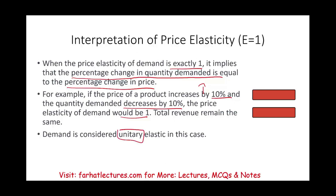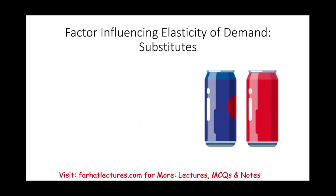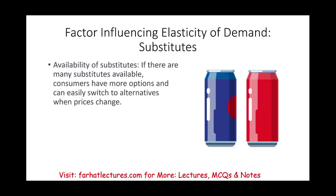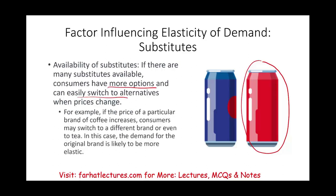What factors influence the price elasticity of demand? First is the availability of substitutes. If there are many substitutes for the product, consumers have more options and can easily switch when prices change. The classic example is Pepsi and Coke — if Coke increases its price, consumers can easily switch to Pepsi. Similarly, if the price of a coffee brand increases, consumers may switch to another brand or even tea, making demand for the original brand more elastic.